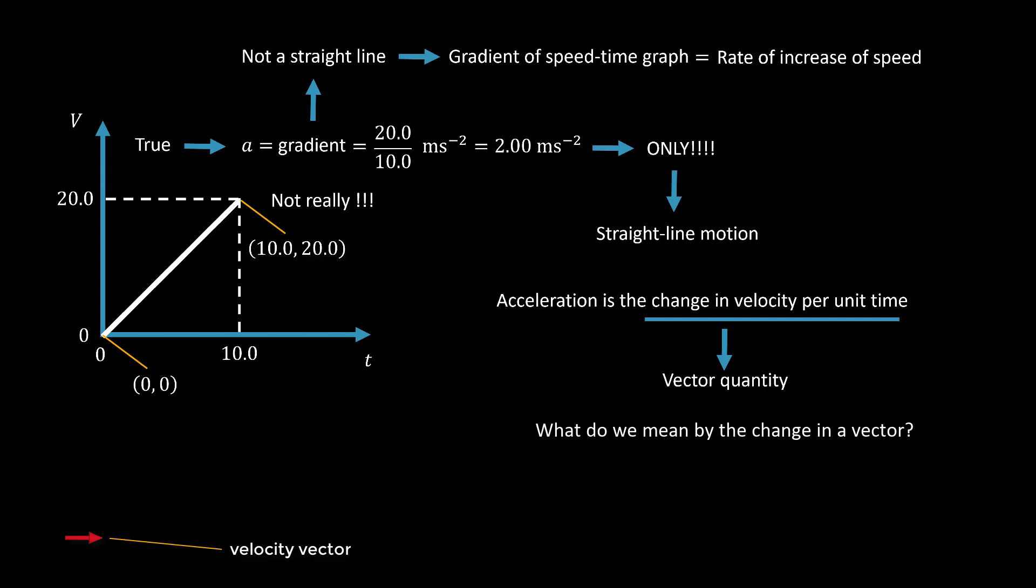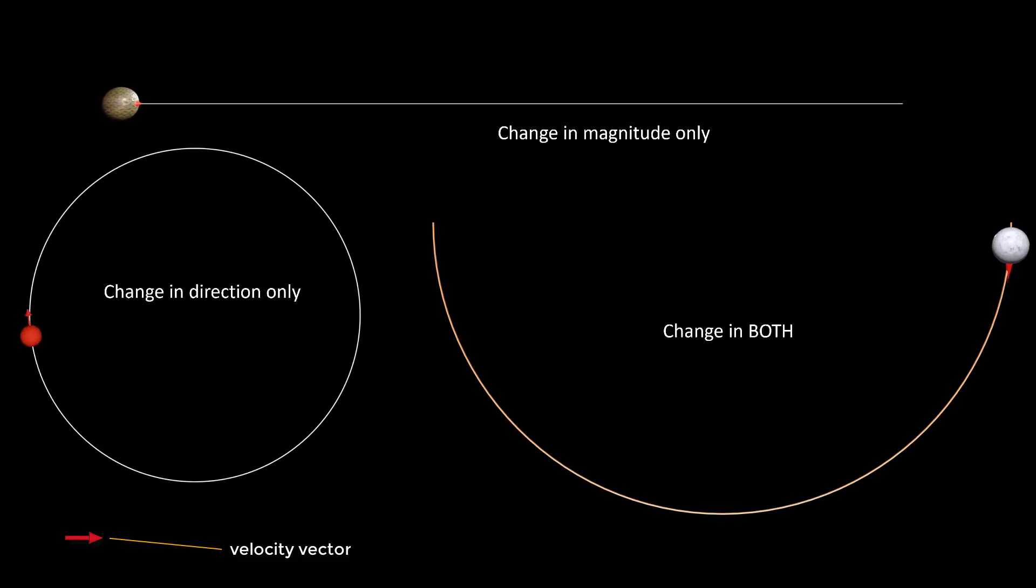If you remember well, a vector has both a magnitude and a direction. So a vector can be changed by changing its magnitude or its direction or both. Remember also that speed is simply the magnitude of the velocity vector.